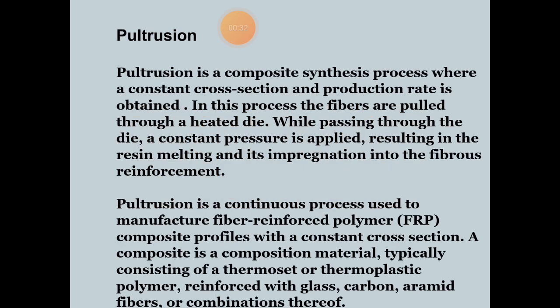First is Pultrusion. Pultrusion is a continuous process for manufacturing a composite material with constant cross-section. Pultrusion equals pull plus extrusion. The Pultrusion process is a highly automated continuous fiber laminating process, producing high fiber volume profiles with constant cross-sectional area.